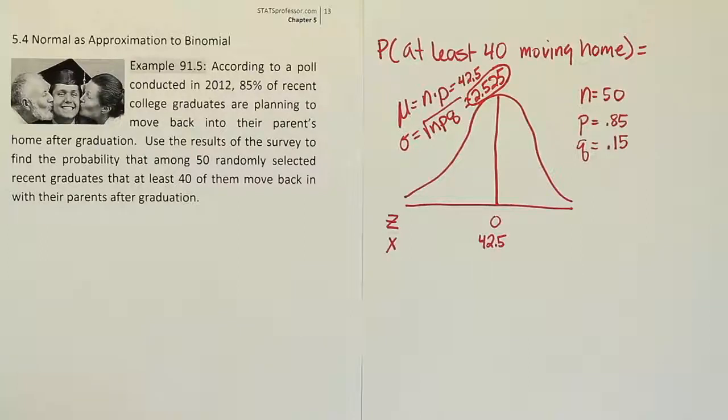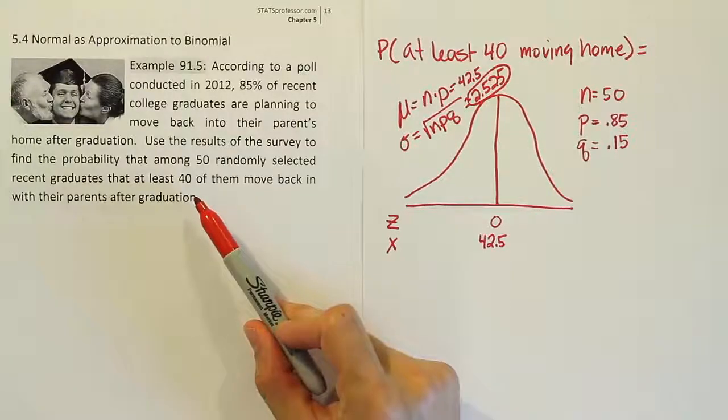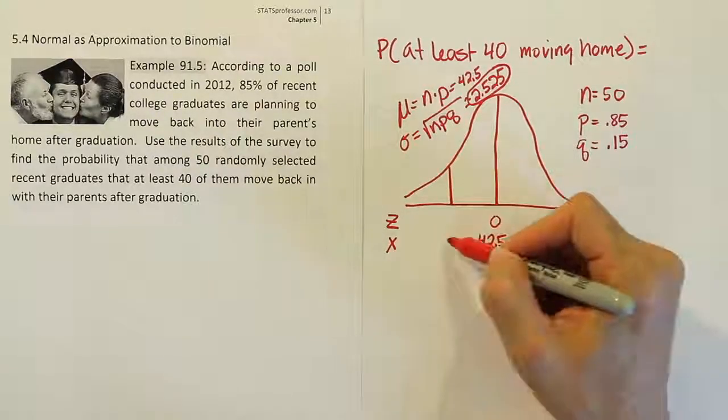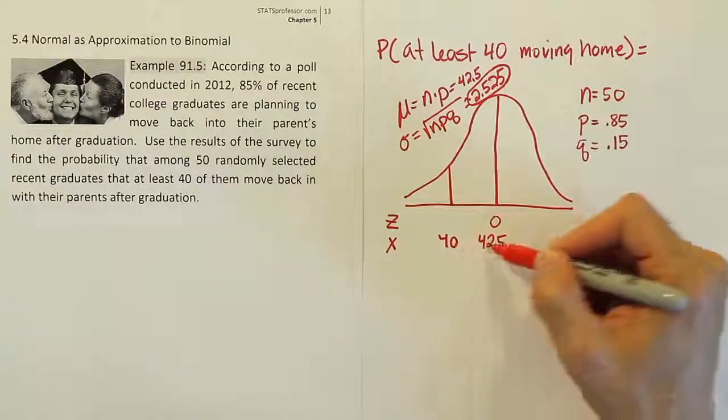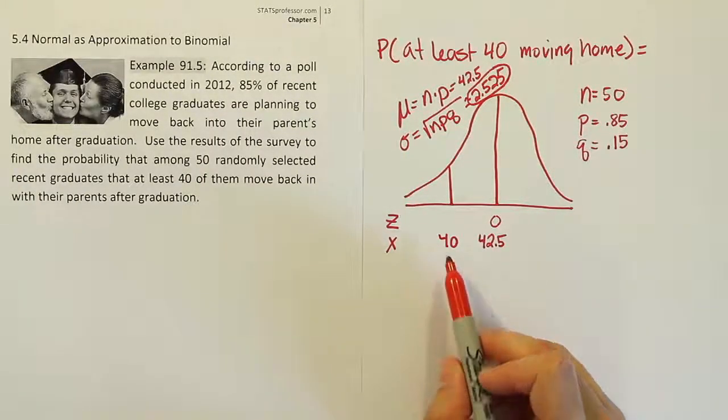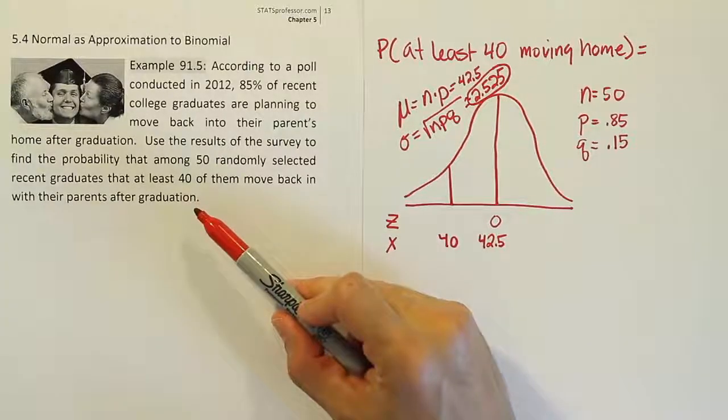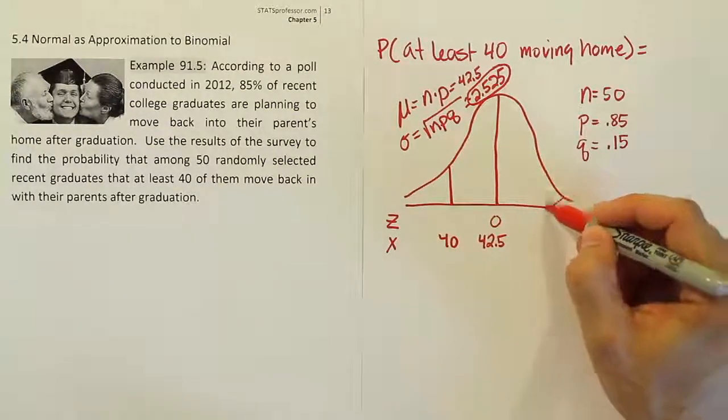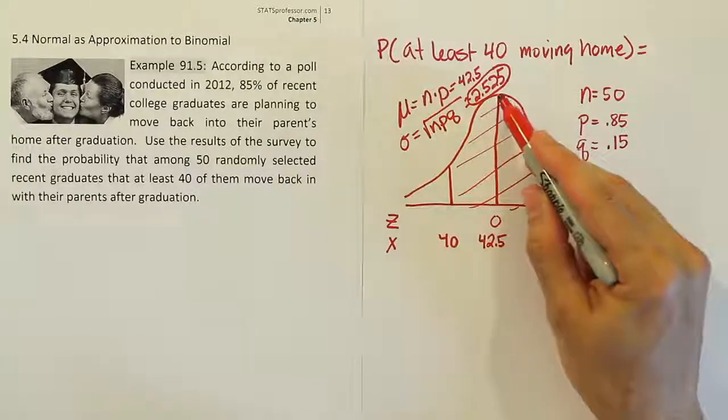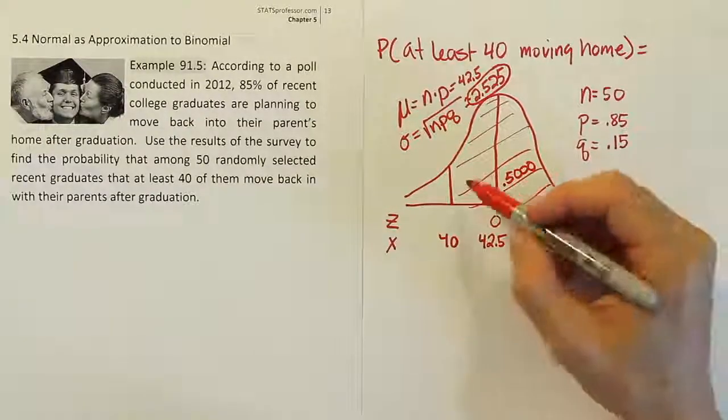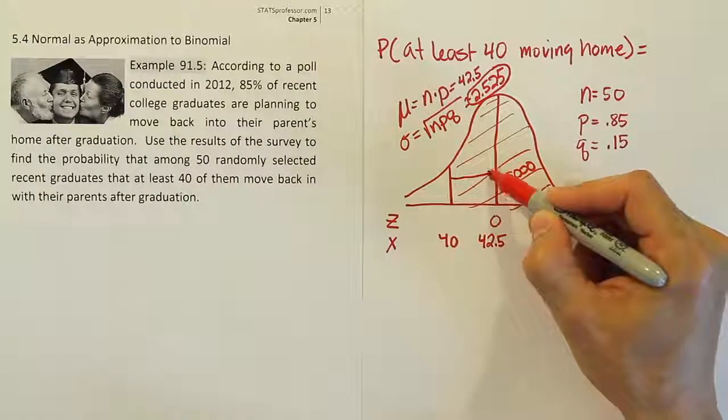If we're treating this like a bell curve problem, we should draw the number that we're interested in on the bell curve. This says the probability that at least 40 of them move back in home. At least 40. So 40 would be here, somewhere to the left of 42. We're talking about number of successes, and 42 is the average, 42.5. So 40 is to the left of that. At least means that value or more. We're looking for essentially the probability that the number of successes is 40 or greater. That's our probability. I happen to know this one's 50%. It's half of the curve. So I know the answer is over 50. The question is, what's the value from here to here?